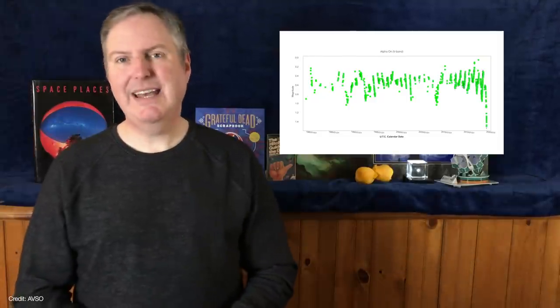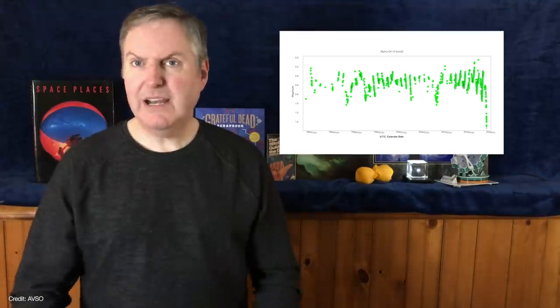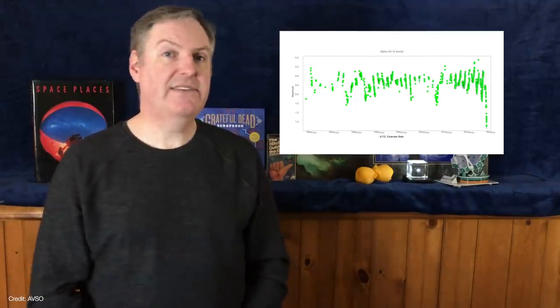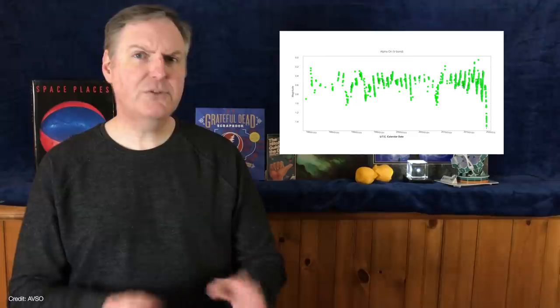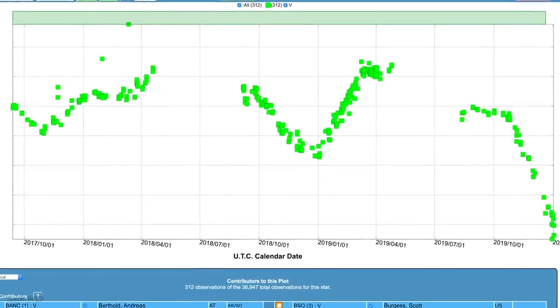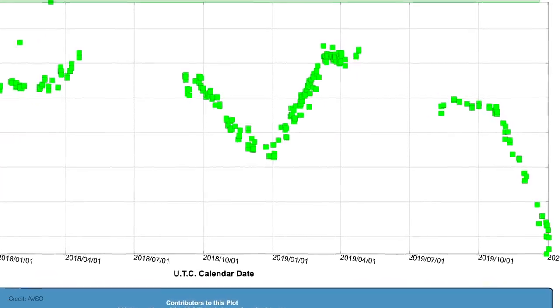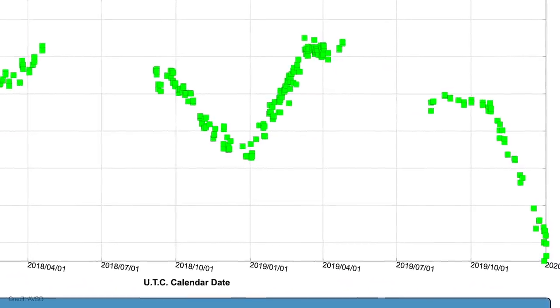To recap, it's been fading ever since it became visible once again in September 2019. And initially, that wasn't really a huge surprise because Betelgeuse is a semi-variable star that fluctuates roughly every 420 days or so. But starting in November, it became much fainter than in previous cycles, and by the end of December, it had lost nearly half of its normal brightness.